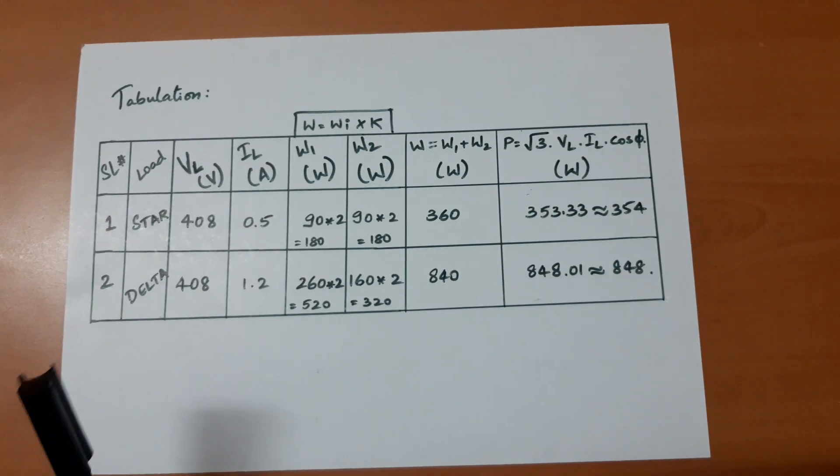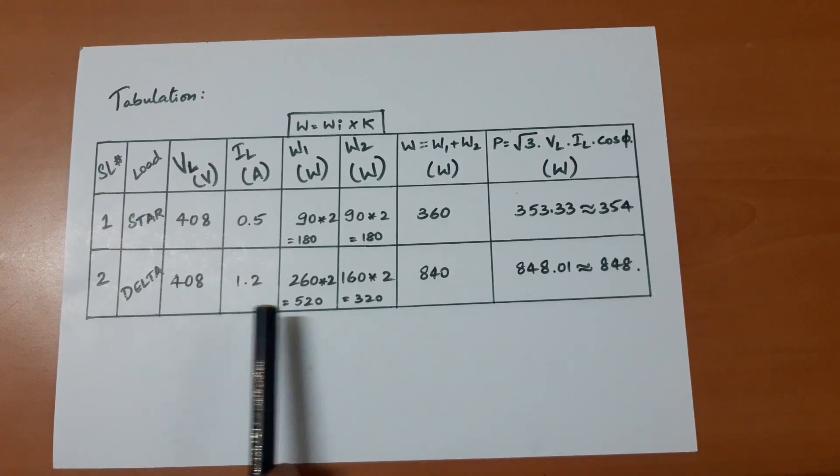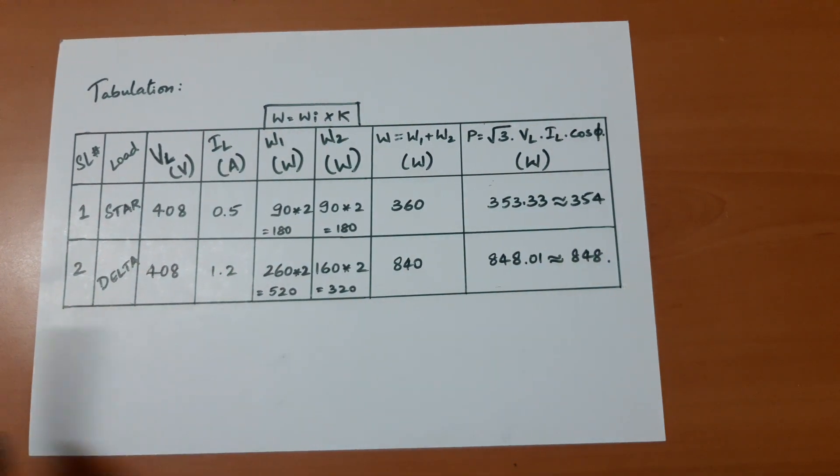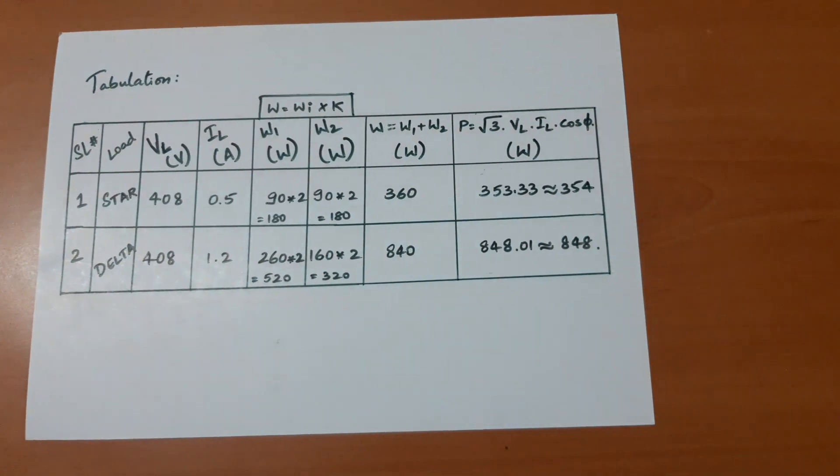Tabulating the readings of the experiment we just conducted - VL, IL, W1, W2, W and P - we can notice that the values of P and W are almost close.